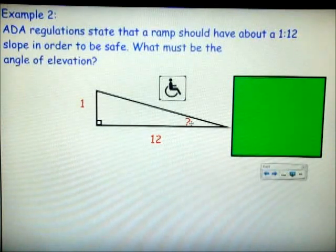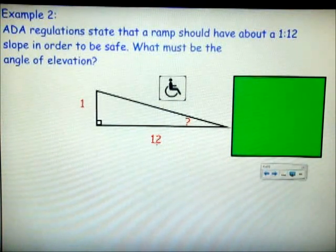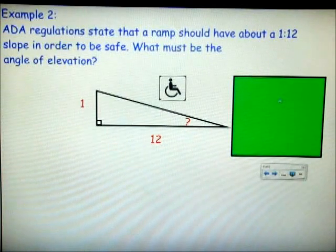We want to look and see what we've got. We have the angle of elevation. We have the side opposite. We have the side adjacent. Opposite over adjacent means tangent.